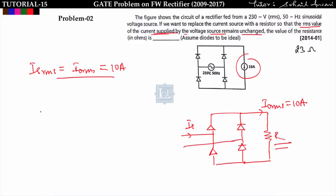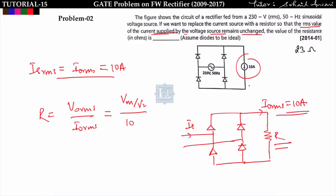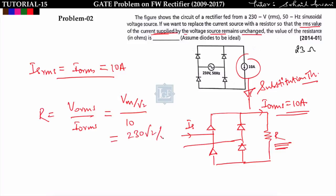Using the substitution theorem from network theory, to replace the 10A current source we insert a resistor R such that all other parameters remain unchanged. R = V_out_rms / I_out_rms. In a single-phase full bridge rectifier, V_out_rms = V_m / √2 = (230√2) / √2 = 230V. Therefore R = 230 / 10 = 23 ohms.